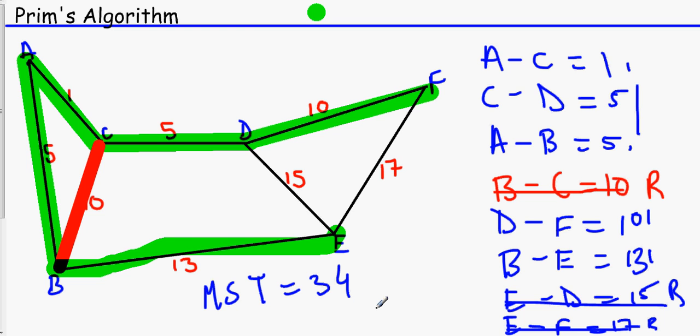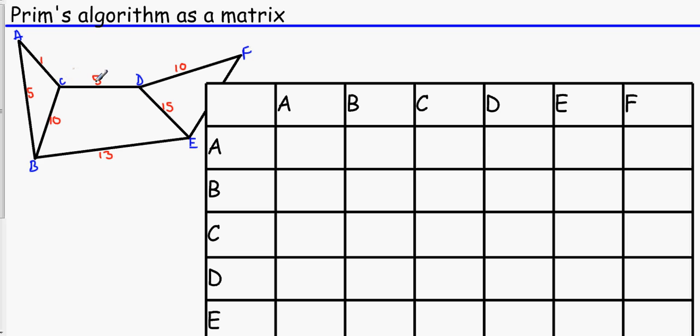And if you were watching the other video before, you'd know that that MST is exactly the same as Kruskal's algorithm. They're exactly the same. And exactly the same diagram as well. Can you believe? Now the thing about Prim's algorithm is that you can apply it on matrices. So if we quickly fill this out, the matrix is basically the distance between one point and the next point.